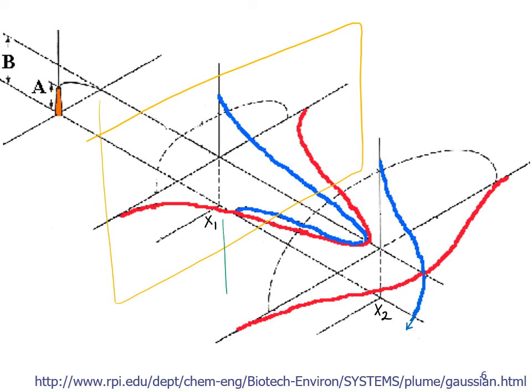And then once you move farther downwind to this second plane, outlined in green now, you can see that the plume has spread out, so that red line has kind of flattened out, and then the blue line has too. And then there's something happening at the ground that we haven't accounted for yet, but we'll talk about that in a future video.